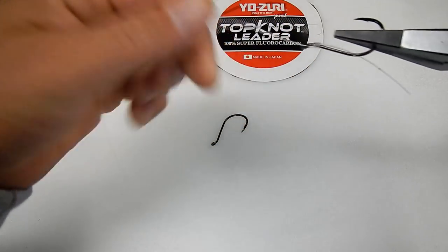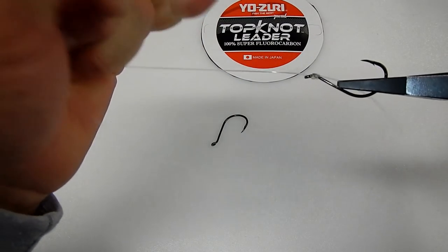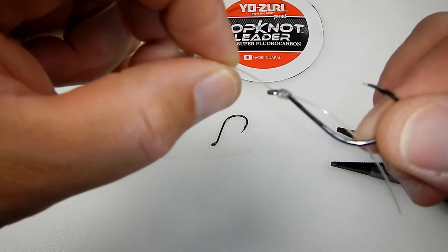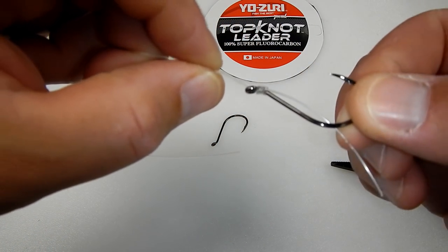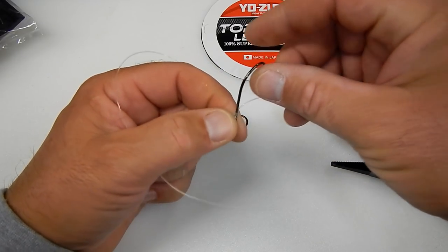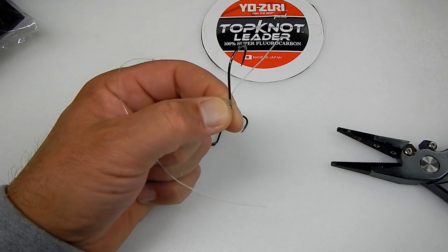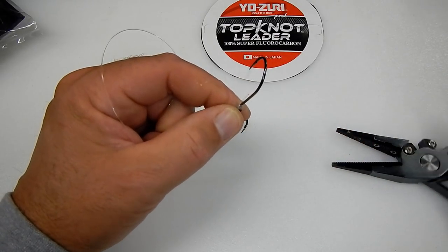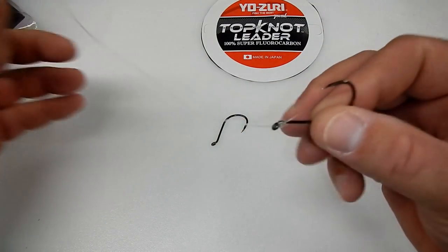Now if you want to slide up the snell you just grab your hook, pull the pressure, and as you heard that little snap that's the line sliding up on the shank of the hook. From there you can trim off that little tag end. That's one part of the snafu rig complete.